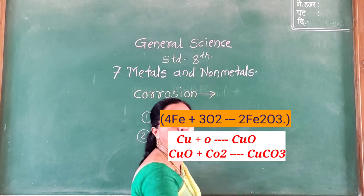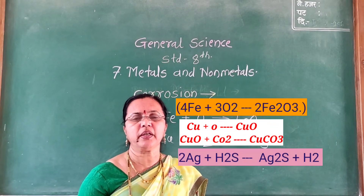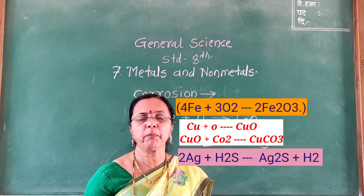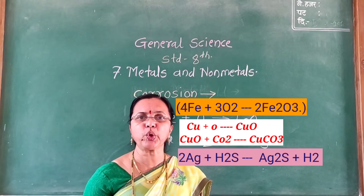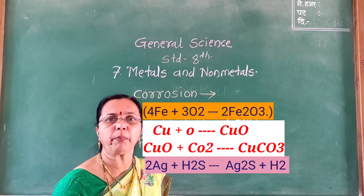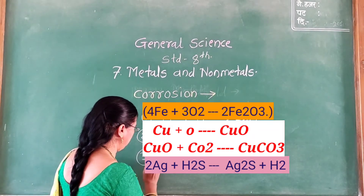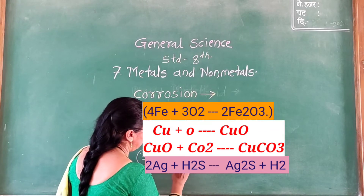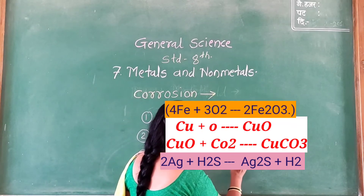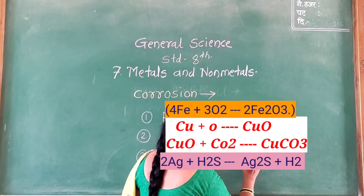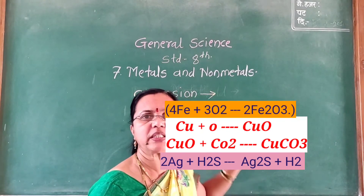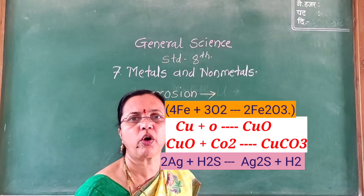Third example: a blackish colour deposit is formed on silver by reaction with hydrogen sulfide gas, forming silver sulfide. Silver reacts with hydrogen sulfide in air and silver sulfide and hydrogen gas are formed. These are three examples of corrosion.